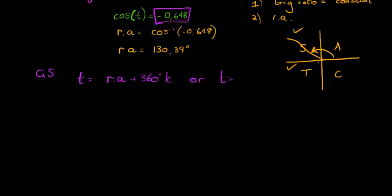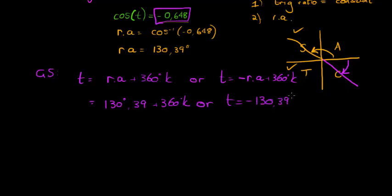the other quadrant where cos is positive is in the fourth quadrant. So in other words, negative the reference angle plus 360 degrees times k. So the first one: t = 130.39° + 360k°. Or, in this case, we get t = -130.39° + 360k°.